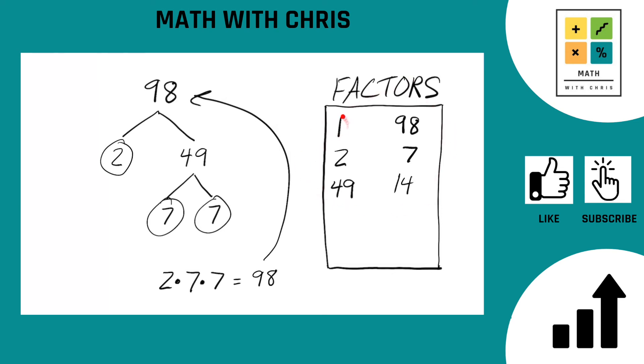The factors of 98 are 1, 2, 7, 14, 49, and then 98. 98, you look tough, but no problems here.